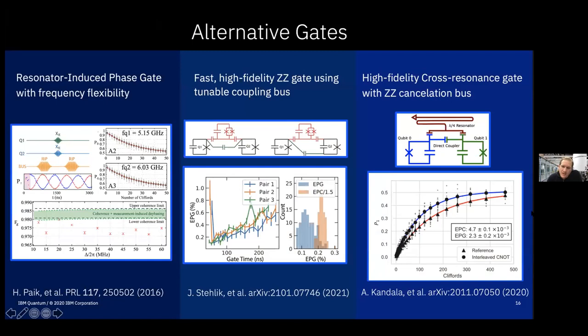For gates, we need to keep pushing. The cross-resonance cancellation gate is one approach; another is bringing flux back in but only into the couplers, not the actual qubits. Teams have recently shown fast gates with low error rates around 1×10^-3 with this approach. It's also important to keep thinking about alternative gates that exploit different properties. Continued pushing on novel two-qubit gates is definitely needed to keep working toward our targets.